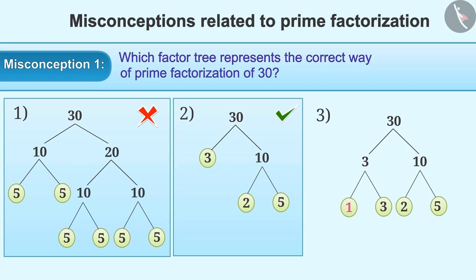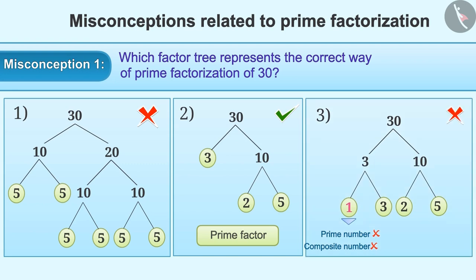Sometimes number 1 is also included in the factor tree. It is important to understand that the factor tree is created to obtain the prime factors. Since 1 is neither a prime number nor a composite number, option 3 is also an incorrect answer.